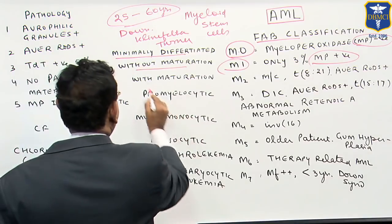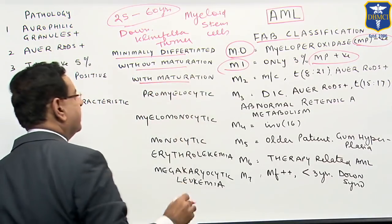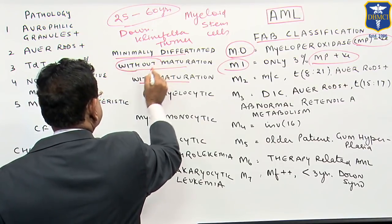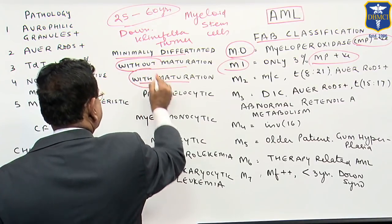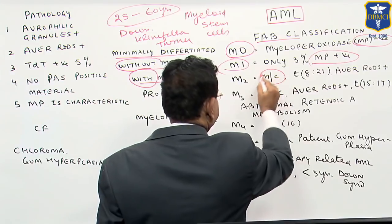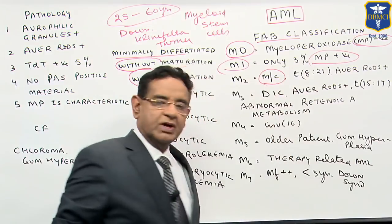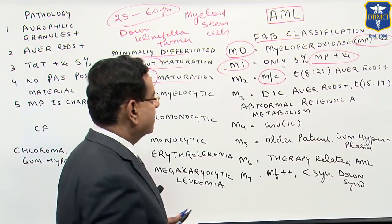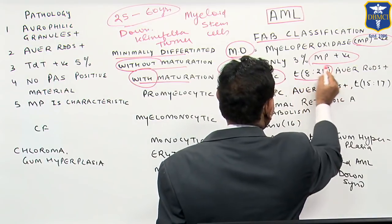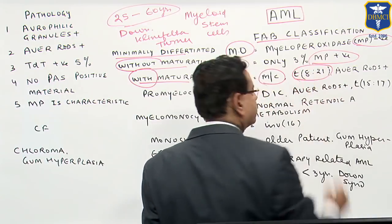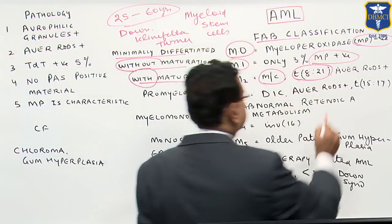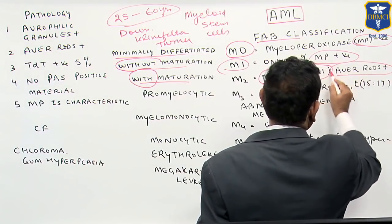M2 is AML with maturation — M1 was without maturation, M2 is with maturation. This is the most common type of AML. Classically in M2, t(8;21) translocation is seen and Auer rods are positive in these cases.